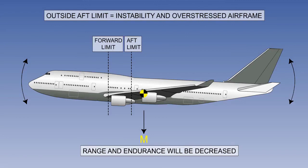As we learnt previously, the range and endurance was reduced with a forward limit being exceeded. This is also the case with the aft limit exceeded, as the resulting extreme manoeuvres lead to an increase in drag.